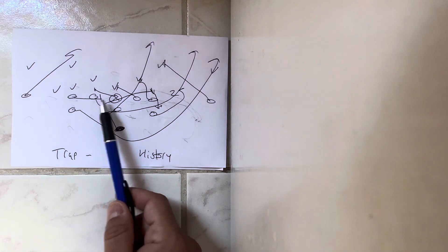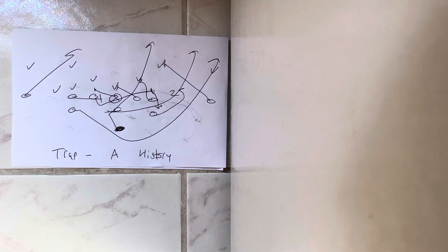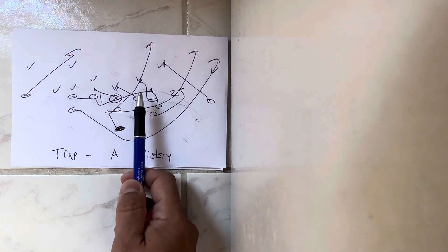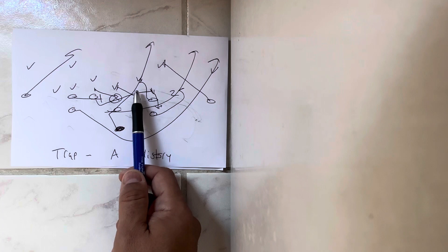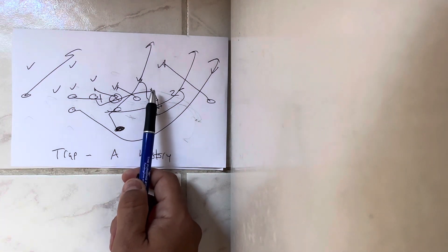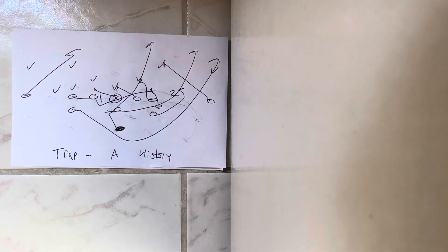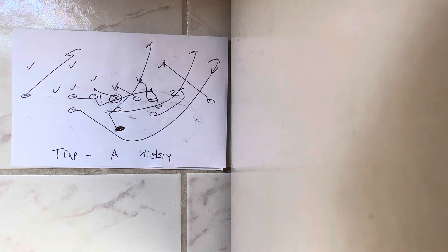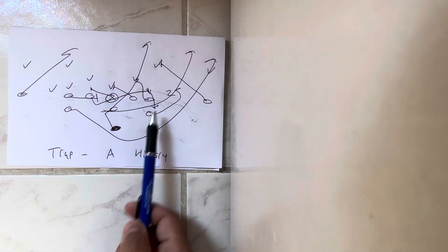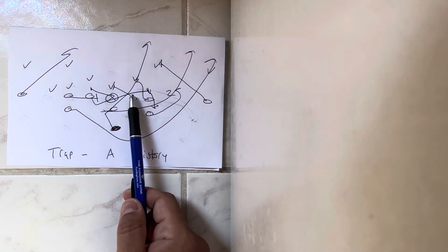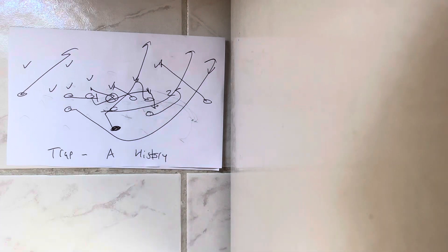The other thing they learned is by running the short trap — trapping from a two technique out — if this player is coming up the field, which is why you'd run the trap in the first place, the player next to him would be coming up the field as well. And really that's the player over whom you're trying to take advantage. If he's coming up the field, they would trap the two or three technique and then the five technique would run up the field, so they wouldn't have to waste anybody blocking him.